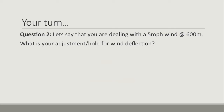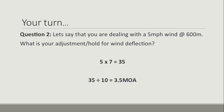Question two — dealing with a 5 mile an hour wind at 600 meters. What is your adjustment or hold for wind deflection? Pause the video and run through the formula, then check your answer. Here's the answer: 5 multiplied by 7 — our constant for 600 meters — equals 35. 35 divided by 10 equals 3.5 minutes of angle.